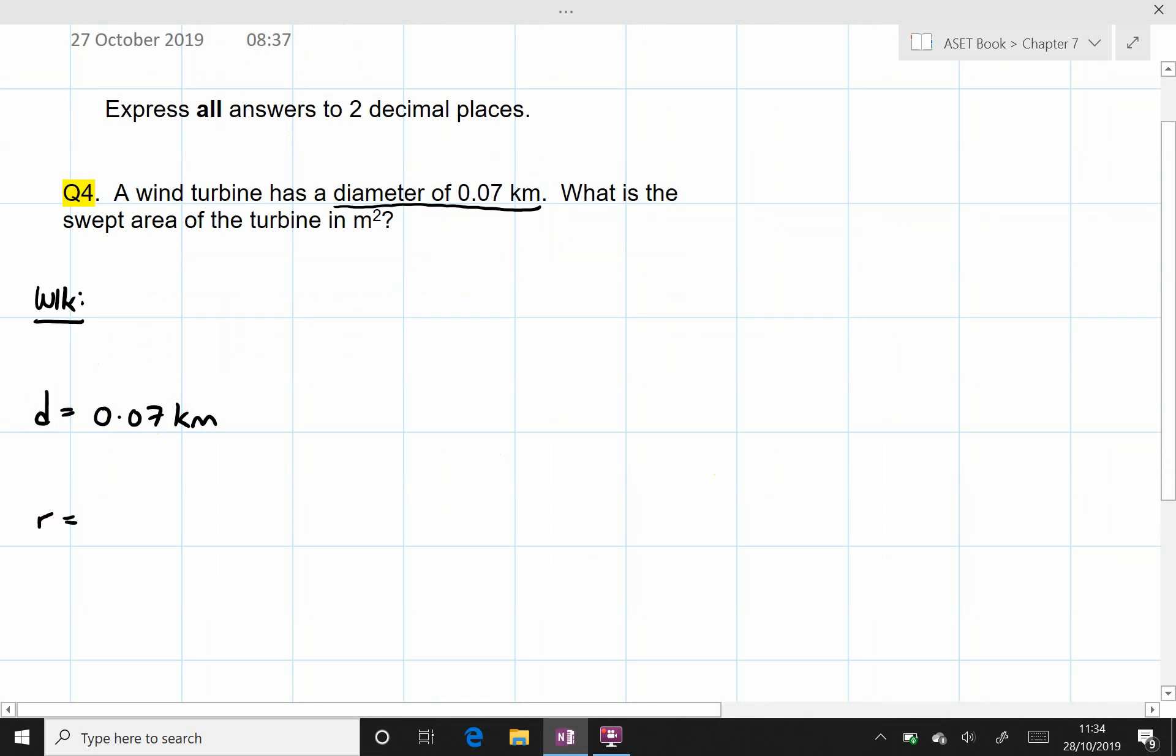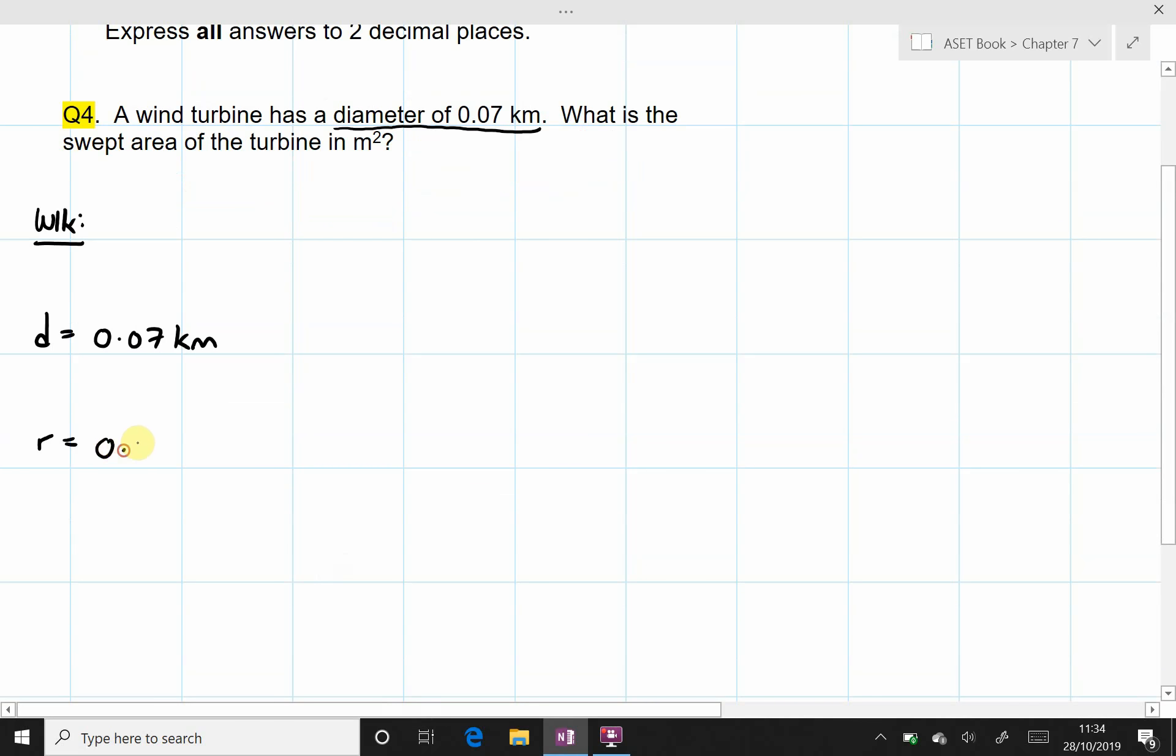And as seen in some of the previous questions, to go from diameter to radius we need to divide by 2. And so the radius is equal to 0.035 km.